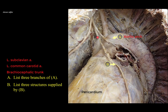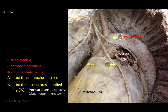Structure B descends from the neck, passes in front of the root of the lung, and lies in close proximity to the pericardium, which it supplies with sensory fibers, on its way to the diaphragm, to which it provides motor fibers. The third structure supplied by the phrenic nerve is the parietal pleura — specifically the mediastinal pleura and the central part of the diaphragmatic pleura — which receive somatic sensory fibers from the phrenic nerve.